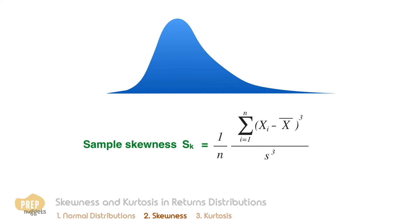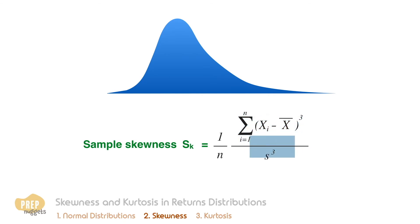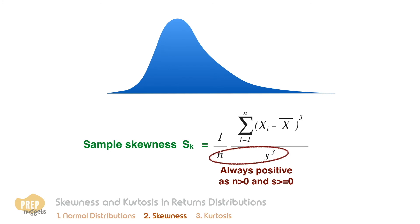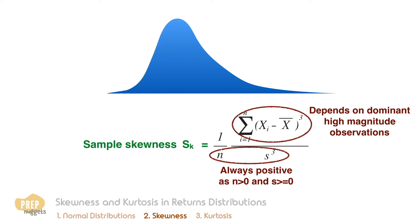For large samples, we can calculate skewness using this formula. It's equal to the sum of the cubed deviations from the mean, divided by the cubed standard deviations and by the number of observations. Note that the denominator is always positive — the standard deviation is always positive. The numerator can be positive or negative depending on whether the positive or negative deviations are dominant.